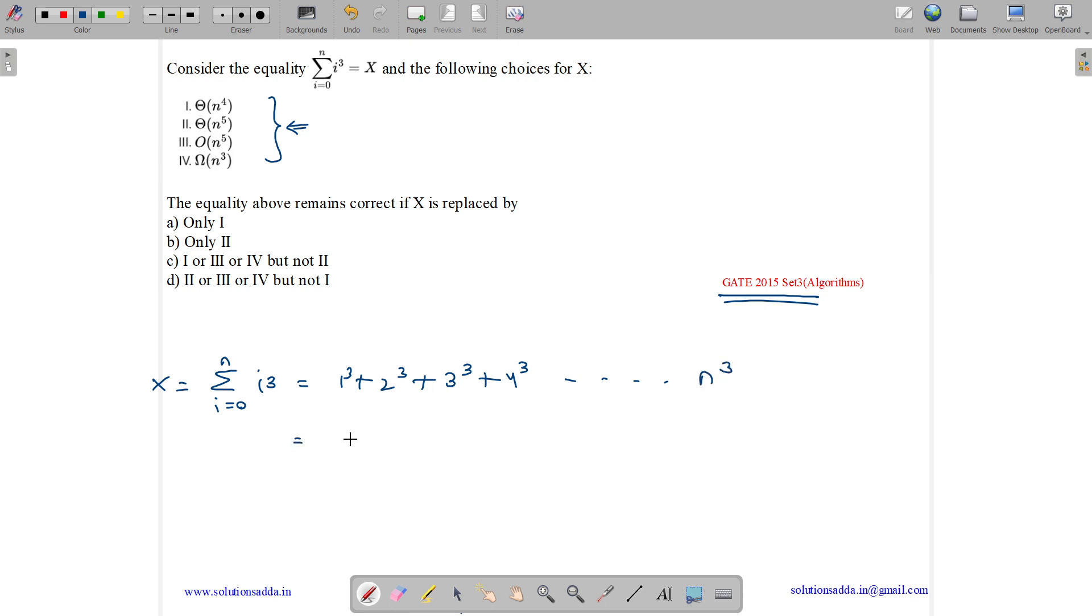This is a standard mathematical equation whose value equals n times (n plus 1) by 2 whole square. We will get n square times (n plus 1) whole square by 2, which will be equal to n by 4, which equals n square times (a square plus b square plus 2ab) by 4.